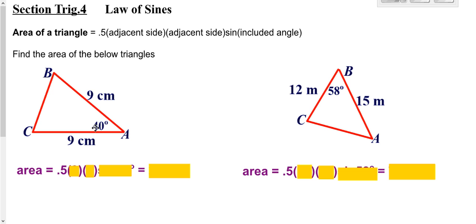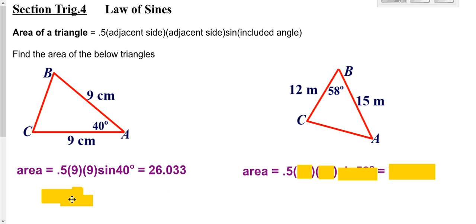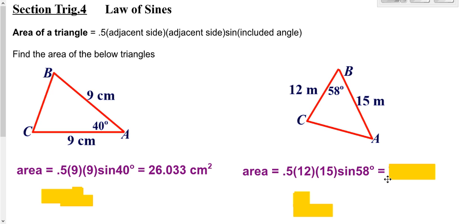So we're going to have an angle in between here, and we go one half times one side times the other side times the sine of the angle in between. We type this in making sure our calculator is in degree mode, and we get our answer with appropriate units of centimeters squared. Same idea for the next one — we have an angle in between, so we go one half times one side times the other side times the sine of the angle in between, type into our calculator, and since our units are meters, our area is meters squared.